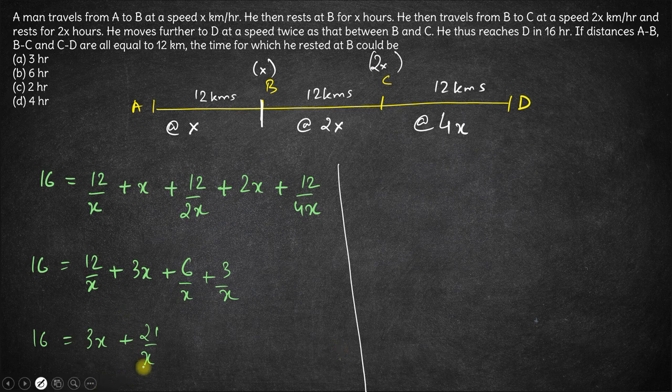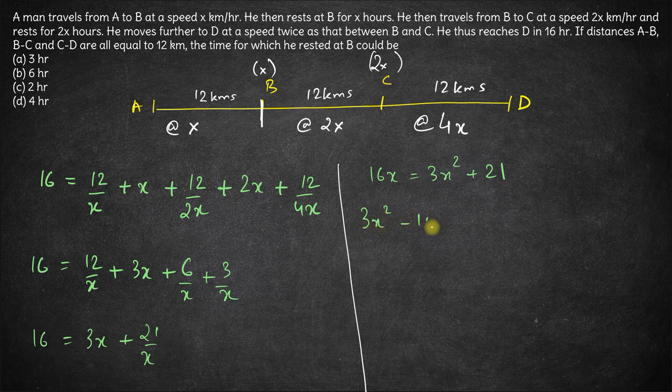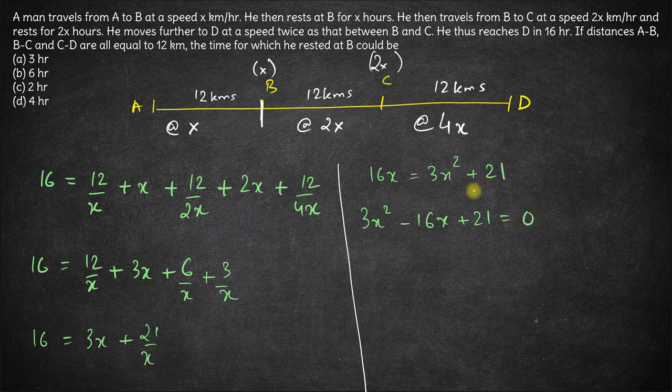Now multiplying the whole equation with x. So we have 16x is equal to 3x square plus 21. Taking 16x on the right side, we effectively have 3x square minus 16x plus 21. This is equal to 0.